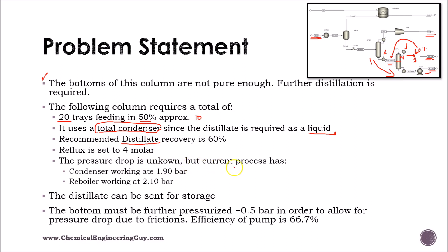The pressure drop is unknown, but current process has a condenser working at 1.90 bar and reboiler working at 2.10 bar. And this makes sense. Remember that pressure drop goes from top to bottom. The distillate can be sent for storage, meaning this distillate can go directly as a product, but the bottom must be further pressurized, actually 0.5 bar in order to allow for pressure drop due to frictions. So maybe we're going to send this to another place. We are adding that pressure in order to get to the required pressure in the following process. The efficiency is 66.7%.